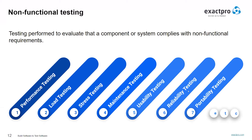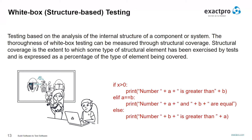Another way to categorize test types is by how much access to the source code the testers have. If we have full access to the source code, we call it white box testing. One benefit of such testing is we could explicitly calculate the coverage and measure how much of the code is covered by our tests. We can measure statement, branch, and path coverage, and usually we'd have at least full statement coverage — meaning all executable statements in the source code are executed at least once.